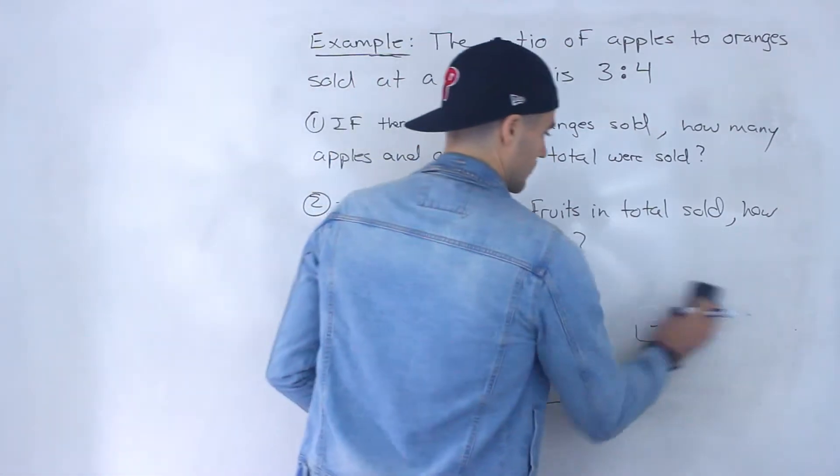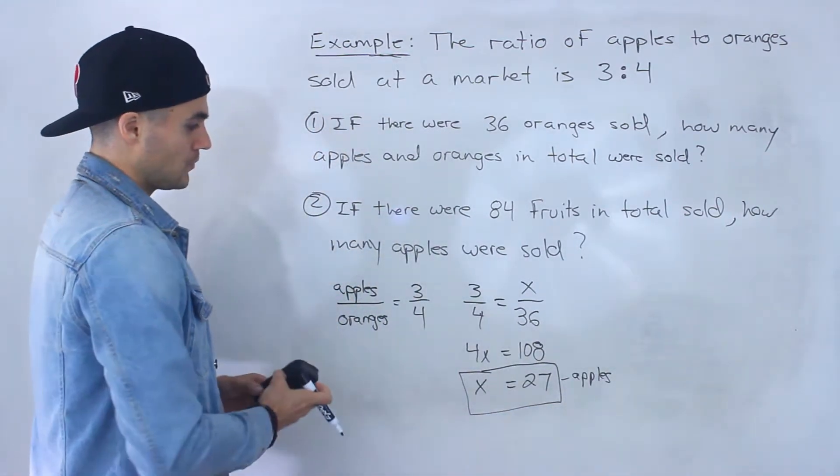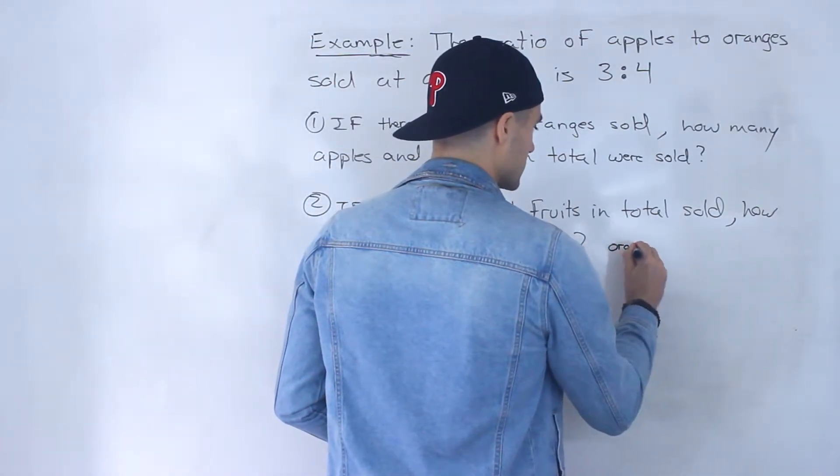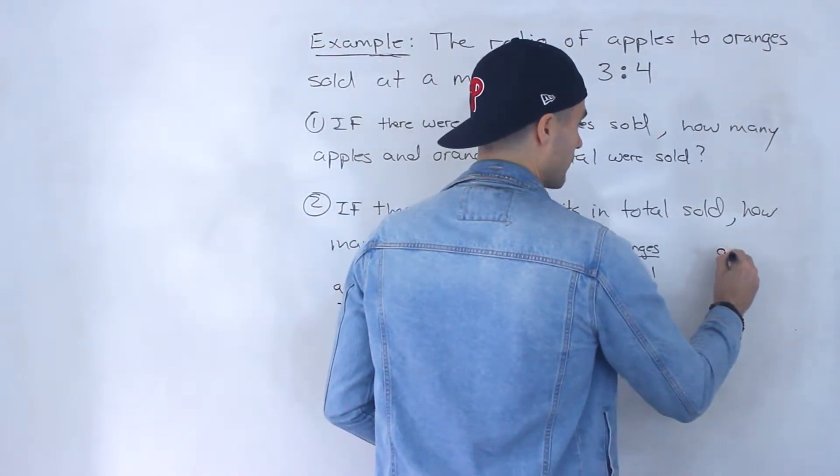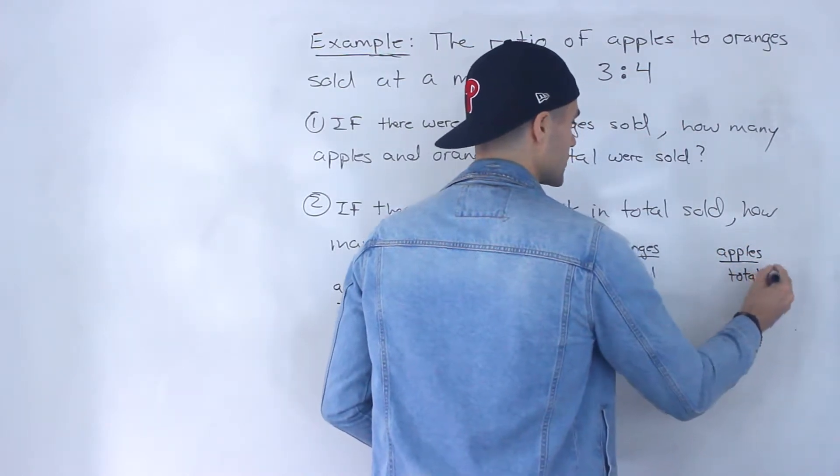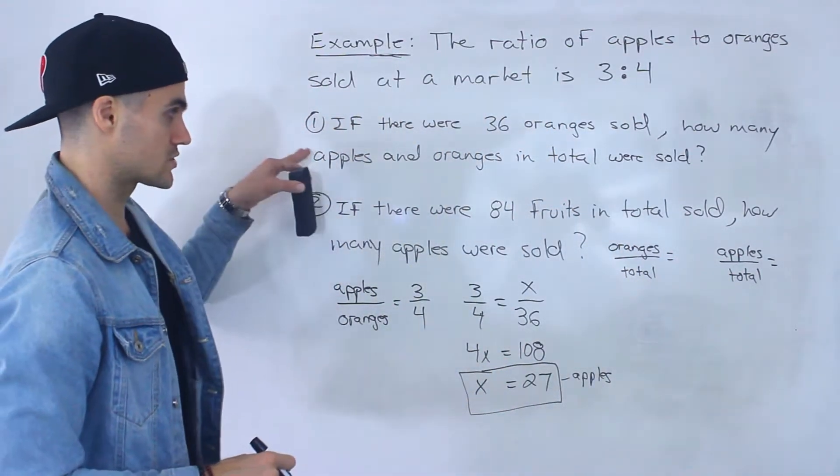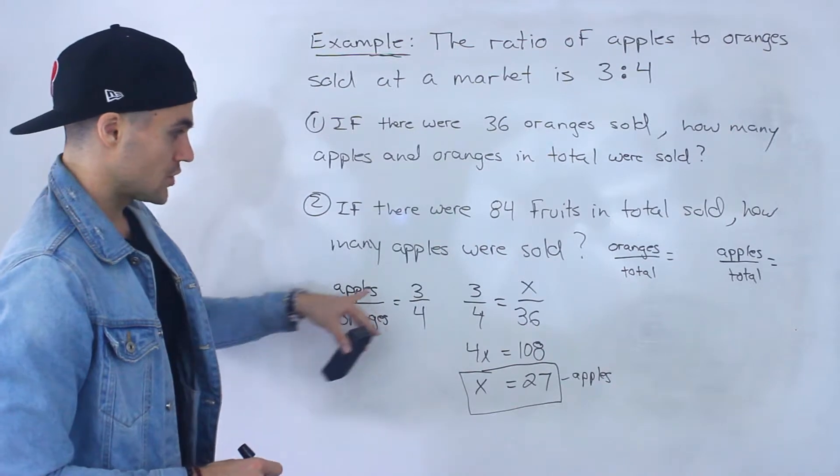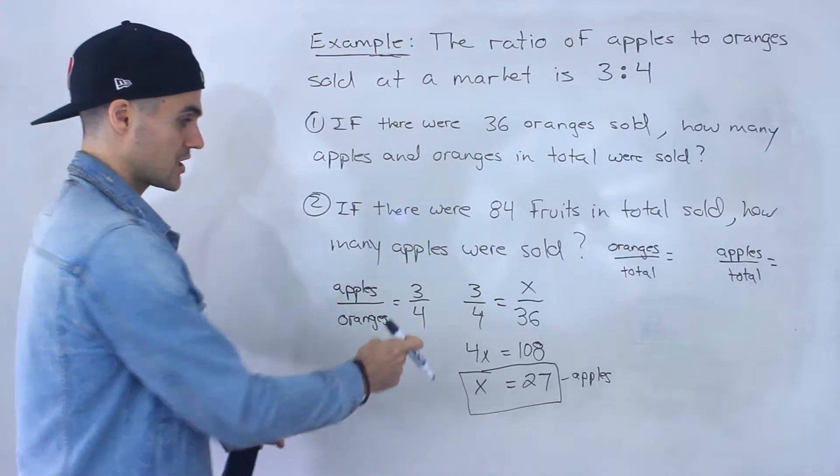That's one way to go about it: find the number of apples with this ratio since we're given the oranges, then add them, and you get the total. Another way to do this is instead of working with a ratio of apples to oranges, we can create perhaps an oranges to total ratio or an apples to total ratio. Notice if the apples to oranges ratio is 3 to 4, then the oranges to total ratio is going to be 4 to 7.